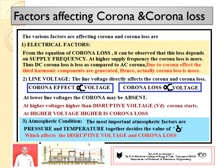Number two: line voltage. The line voltage directly affects the corona and corona loss. Corona effect is directly proportional to the voltage of the system, and corona loss is also directly proportional to voltage. At lower voltages, the corona effect is neglected or absent. At higher voltages — more than the disruptive voltage — corona starts occurring, and higher corona loss will be there.